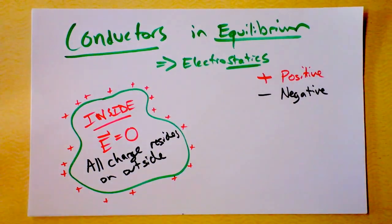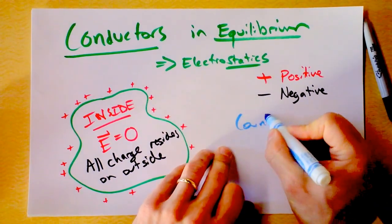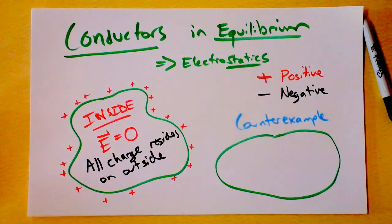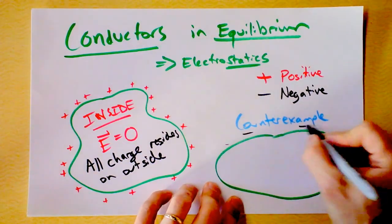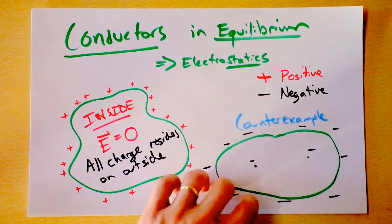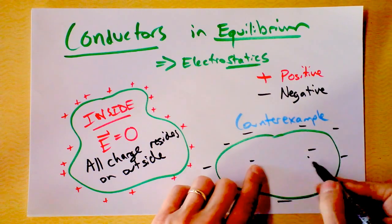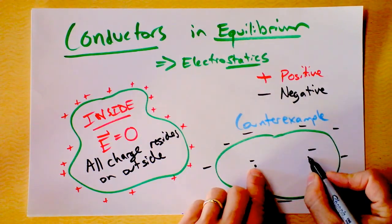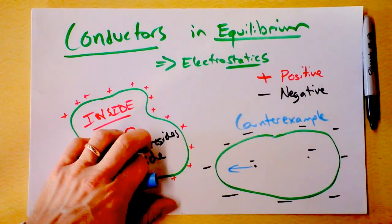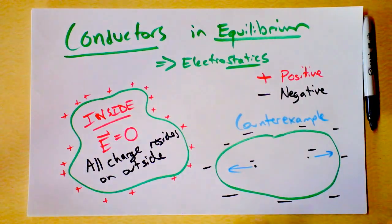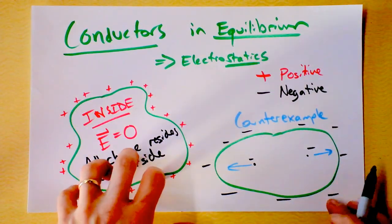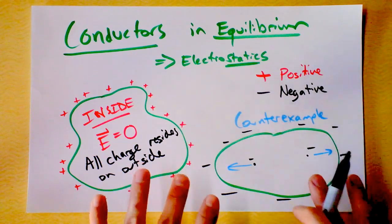Let me give you a counter-example. We've got some conductor with some negative charge here, and also a negative charge here, and a negative charge here. These negative charges will repel each other — this negative charge will feel a force to the left, and this one will feel a force to the right. They will each try to get outside of the conductor, ultimately ending up on the outside. So no unbalanced charges inside.